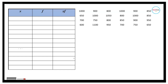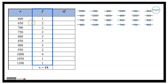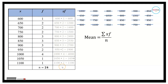Before computing, let us organize the data into a table, arranging entries from smallest to largest up to 1,100. We have: 600 appearing once, 650 twice, 700 twice, 750 twice, 800 three times, 850 three times, 900 three times, 950 twice, 1,000 four times, 1,050 once, and 1,100 once — for a total of 24 people. To compute the mean, we multiply each value by its frequency, add the products, and divide by 24.